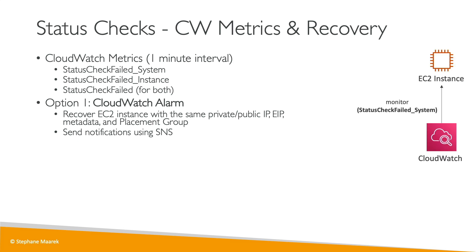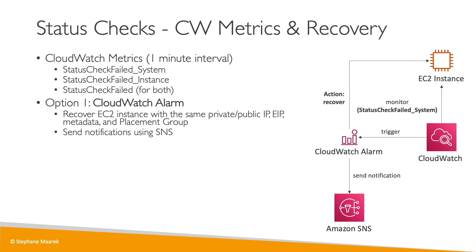Your EC2 instance will be monitored by CloudWatch metrics — for example, for the StatusCheckFailed_System metric, the CloudWatch alarm will be triggered on top of your CloudWatch metric in case it goes to one. The action of your CloudWatch alarm will be to recover your EC2 instance by placing it somewhere else, and you can also send a notification to Amazon SNS.